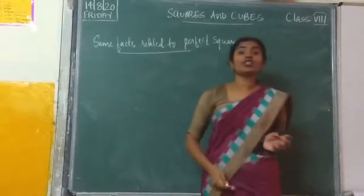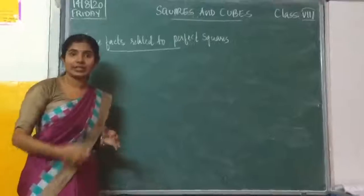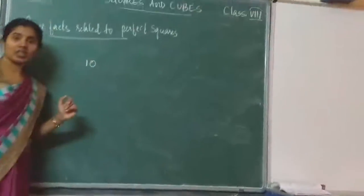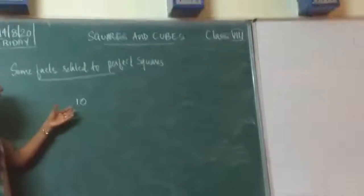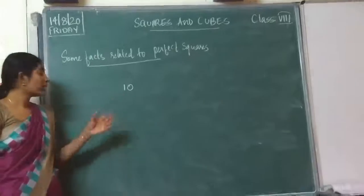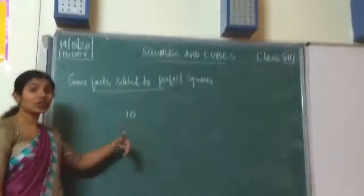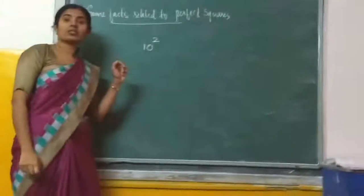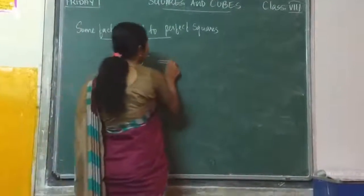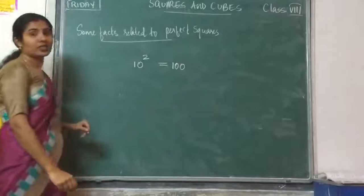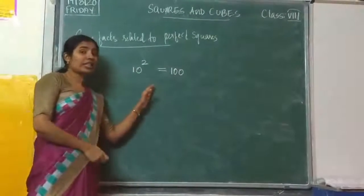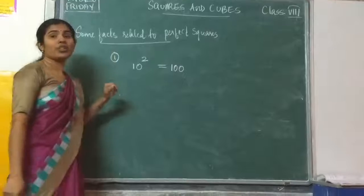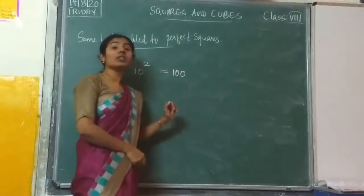Now you should know some facts related to perfect squares. Sometimes you will take numbers like 10, 20, 30 and so on. So for numbers like that, how will you find the perfect square? For example, if you take the square of 10, what is the square of 10? That is 100. Which number are you taking? See how many zeros are there — for 10, there is 1 zero.